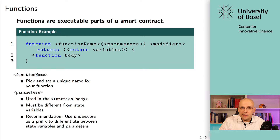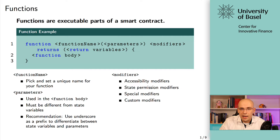Then you have modifiers. As I said, modifiers are for accessibility — state permissions. We'll see later on that there are certain modifiers that can change the way you're interacting with the function, and you can even create your own modifiers. You add them right behind the parameters — that's where you add these permissions and anything that changes the way you interact with the function. And then return variables are entirely optional: whenever you declare that the function returns something, you have return variables in brackets, and that's essentially what you get back when interacting with the function.